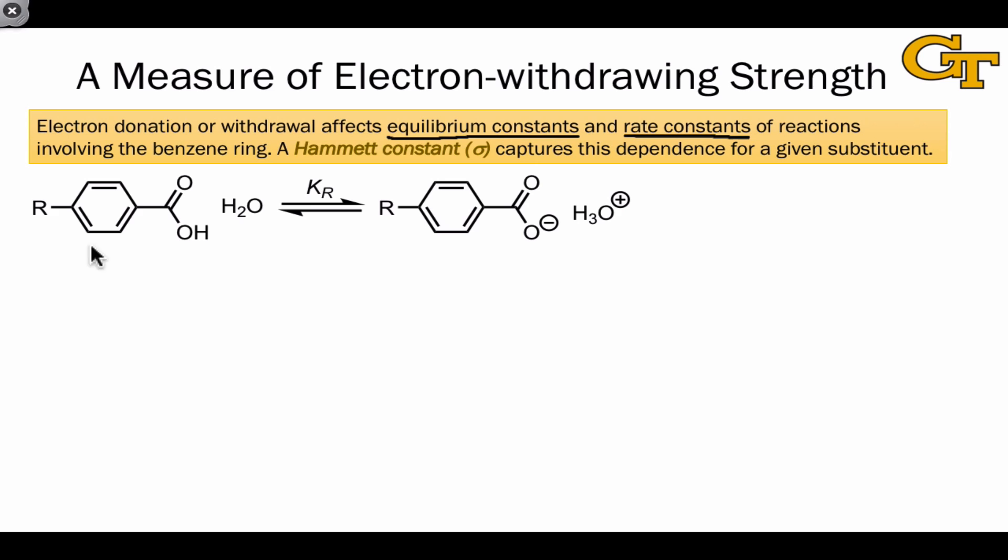Since what we're varying here is the R group located para to the carboxylic acid functional group. And the Hammett constant, sigma p, where the p here just refers to the fact that the substituent is para in the para position relative to the carboxylic acid functional group, is defined as the logarithm of the ratio of the equilibrium constant for this reaction when the substituent R is used here, divided by the equilibrium constant for this reaction when the substituent is simply hydrogen.